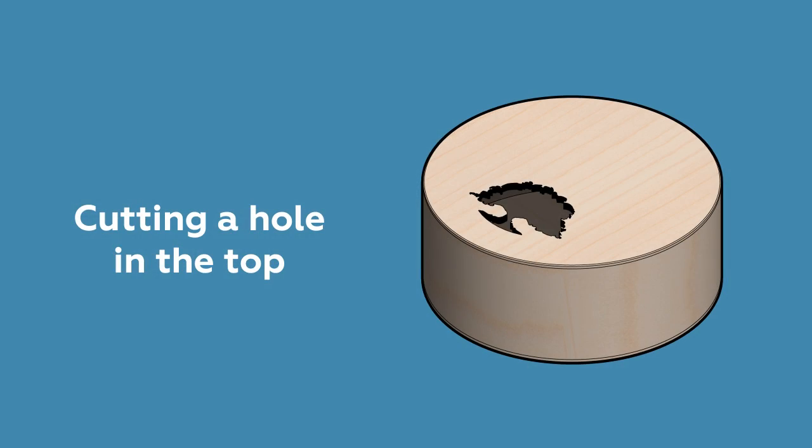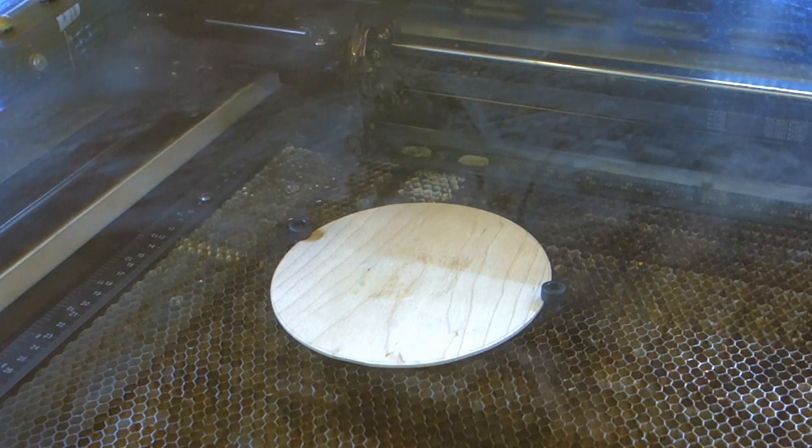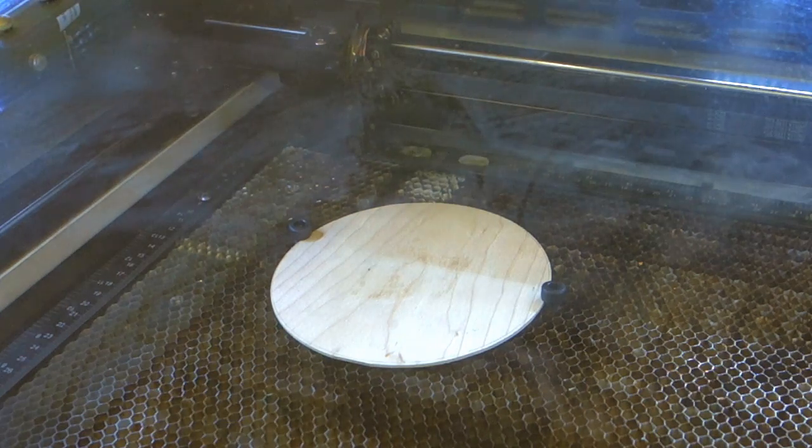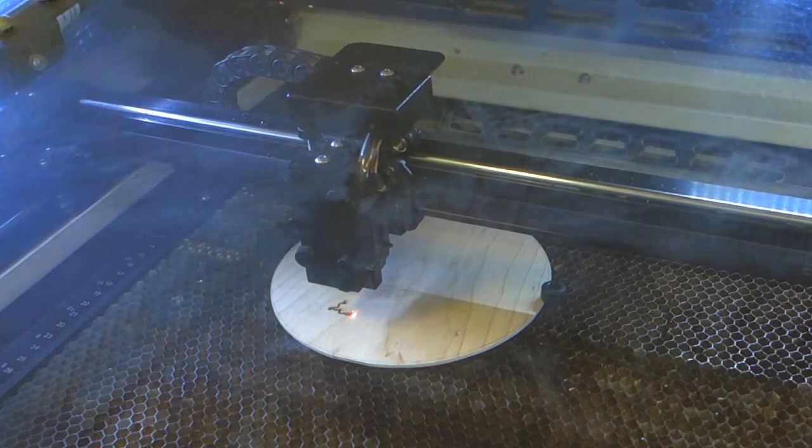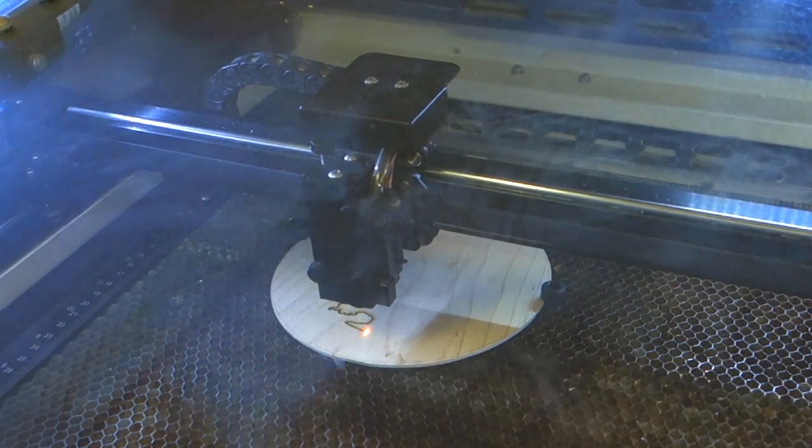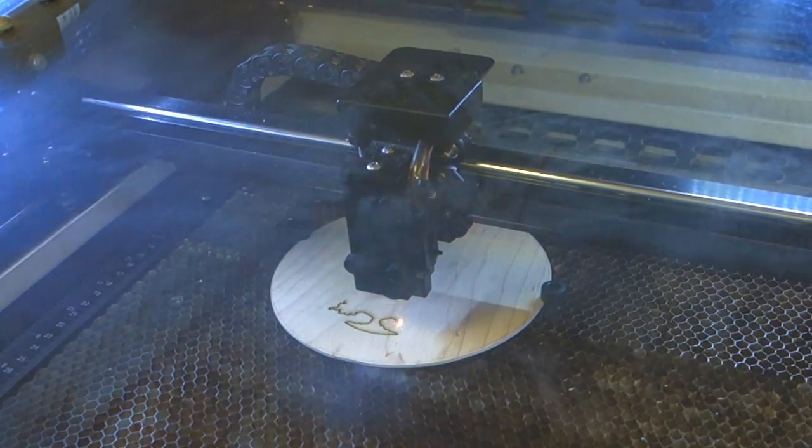While the glue dries, take the top piece and cut a hole through it. This hole allows the sound to escape from the resonance chamber, without it, the sound would be quite muffled. You can use a forstner bit if all you want is a round hole,